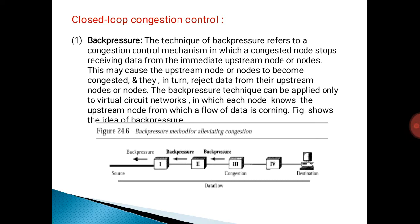The second type is closed loop congestion control. The first mechanism is back pressure. Back pressure refers to a congestion control mechanism in which a congested node stops receiving data from the immediate upstream node or nodes. This may cause the upstream nodes to become congested, and they in turn reject data from their upstream nodes. Back pressure can be applied only to virtual circuit networks in which each node knows the upstream node from which a flow of data is coming.